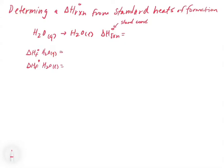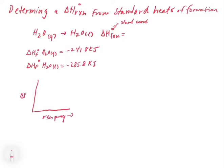The liquid is at −285.8 kJ and the gas is at −241.8 kJ. Now let's refresh our memory with a graphical depiction of what this means. We have reaction progress on one axis and ΔH° on the other. In both cases, the ΔHf is relevant.